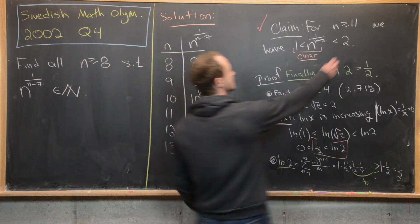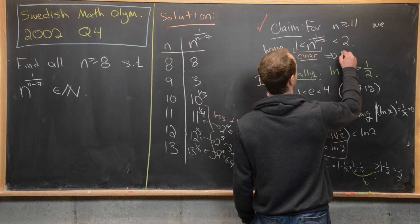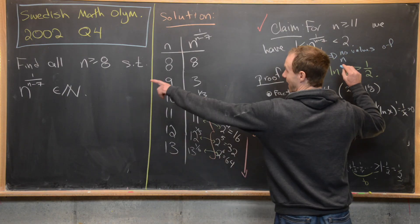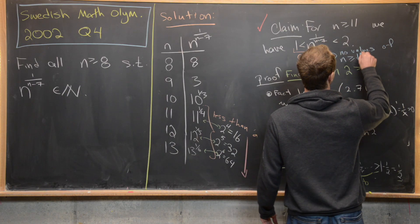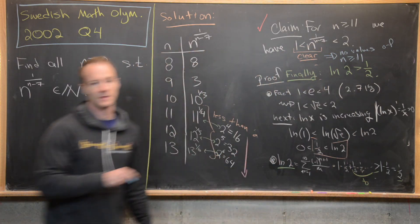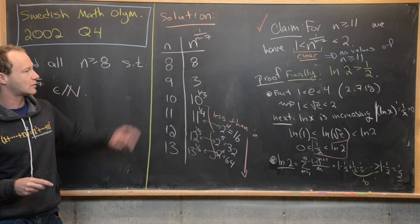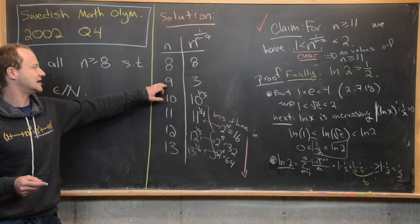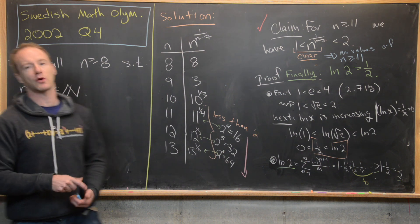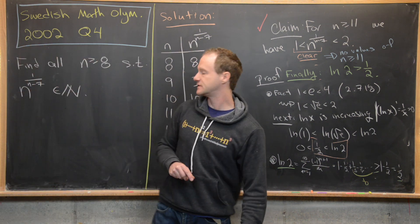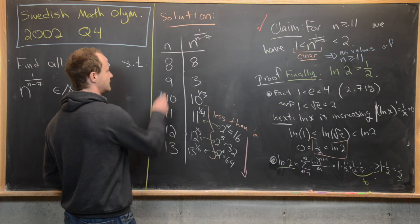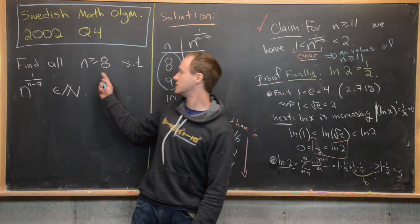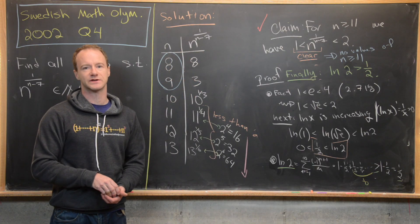So the claim tells us there are no solutions for n ≥ 11. From our chart, n = 10 does not give a natural number, while n = 8 and n = 9 do. Therefore, n = 8 and n = 9 are the only values satisfying the condition.